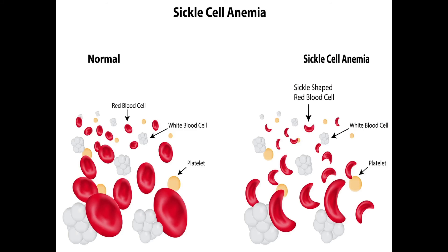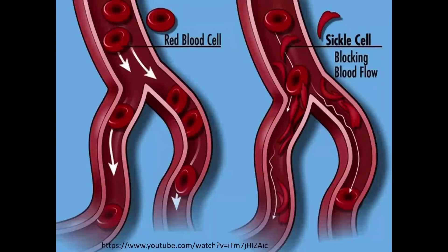Looking at sickle cell anaemia: normal blood contains red blood cells, white blood cells, and platelets. In sickle cell anaemia, the red blood cell takes on a sickle shape — it looks different from a normal round cell. This sickle shape blocks the capillaries: normal red blood cells move efficiently, but sickle cells block the blood from flowing.